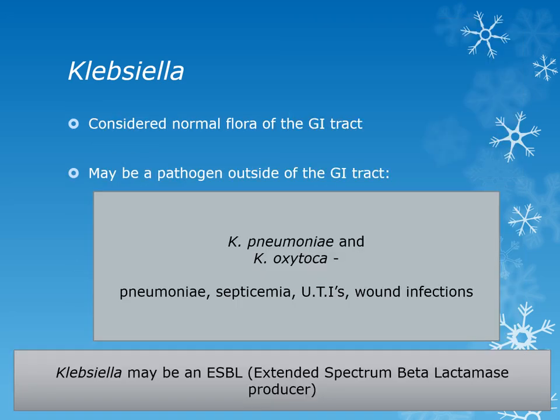Klebsiella is considered normal flora of the gastrointestinal tract but may be a pathogen outside the GI tract. Klebsiella pneumoniae and Klebsiella oxytoca can cause pneumonia, septicemia, urinary tract infections, and wound infections. Klebsiella pneumoniae is the most common Klebsiella isolated in pneumonia cases. Keep in mind that Klebsiella, along with E. coli, can also be an ESBL producer.